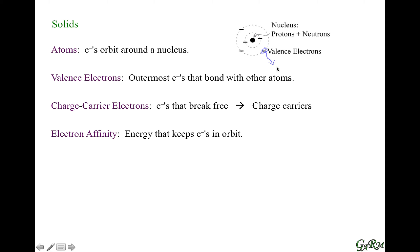The energy that keeps these electrons in orbit and near their nucleus is called the electron affinity. You can think of this almost like Earth and us — we are tightly bound to Earth, and if we overcome a certain energy, we can basically fly off into orbit. In this context, those orbits are electrons that stay within a certain distance of their nucleus.